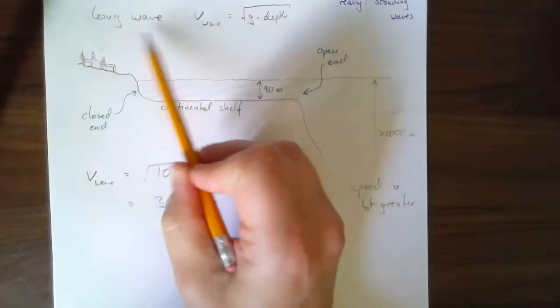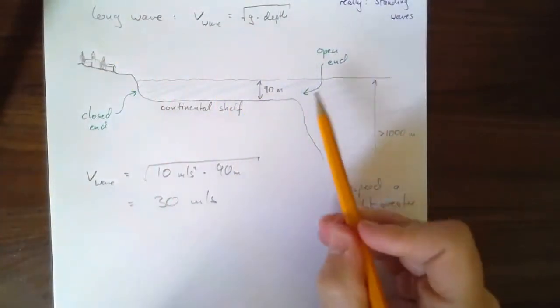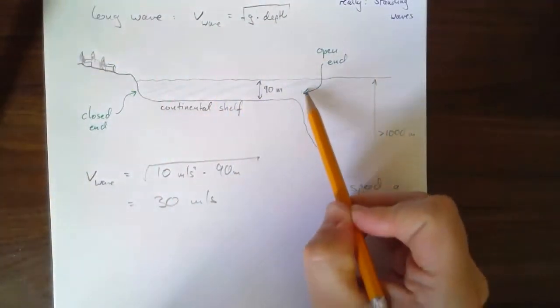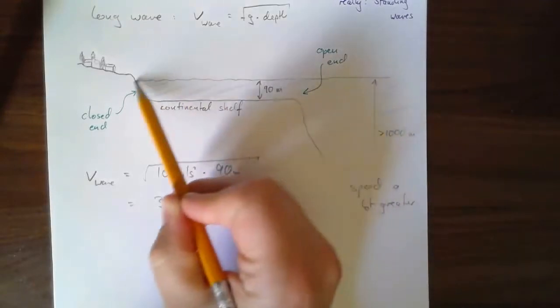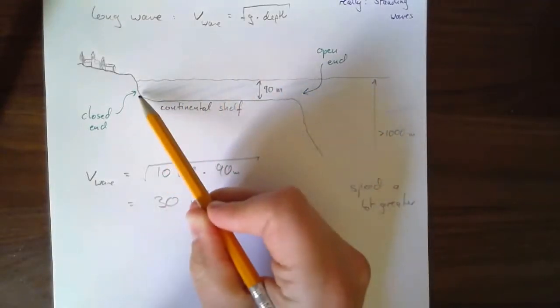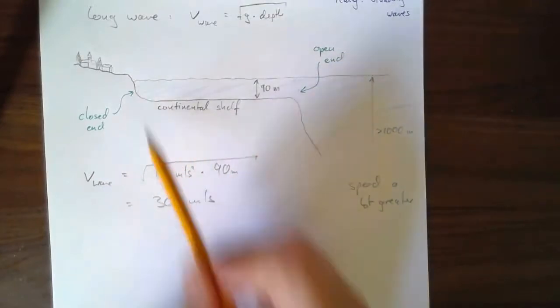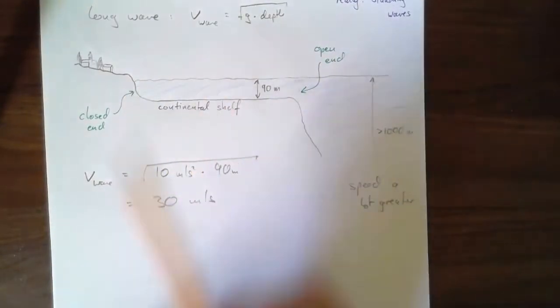But for those so-called long waves, including the tides, there is essentially an open end here, as if this were some kind of pipe, and a closed end here because there's the land. Wave can't go through. Wave has to reflect.